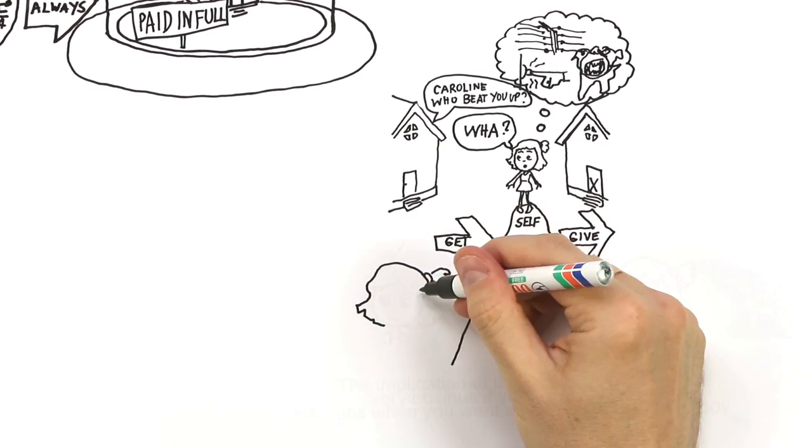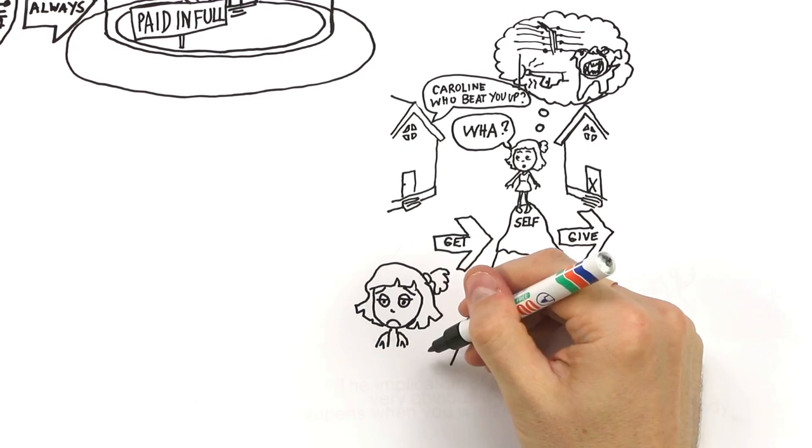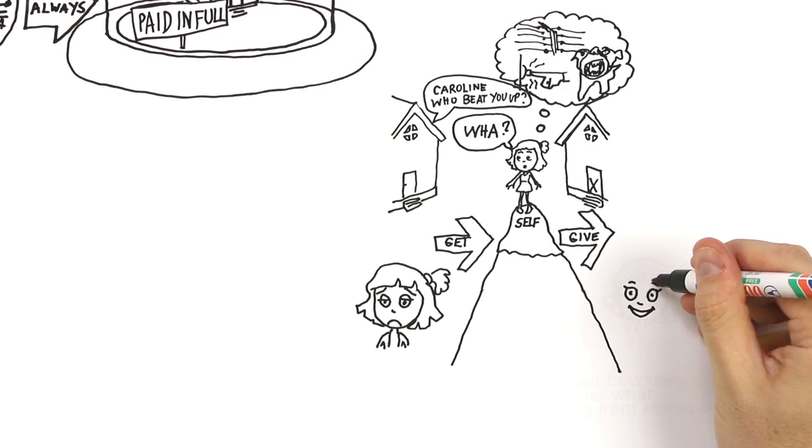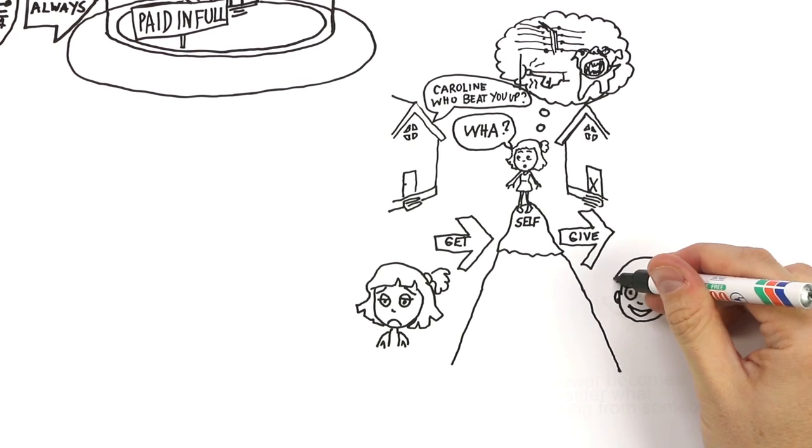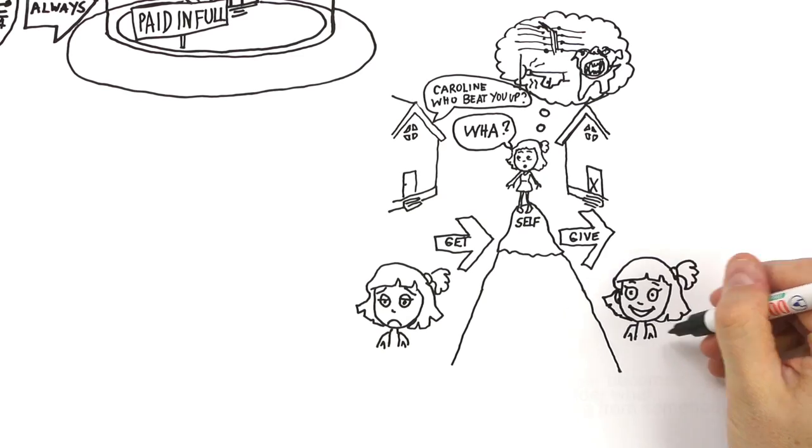Exactly the same argument has to be true for happiness and fulfillment. If my happiness is based on what I'm getting from the world, I'll be discontented. If my happiness is based on the quality of what I'm contributing, because I've always got control over that, I'll be fulfilled and happy.